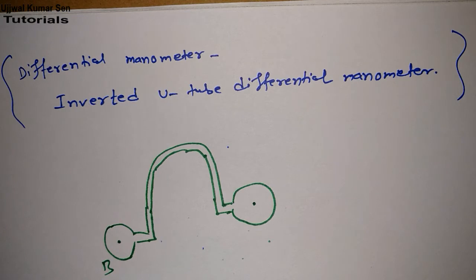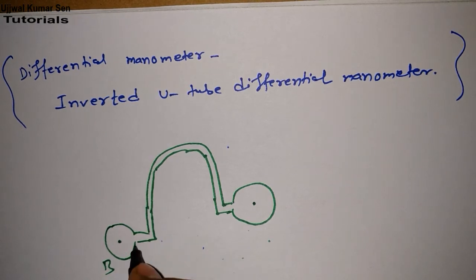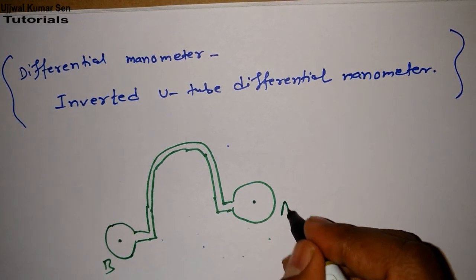In case of differential manometer we have to find out difference between two points of two pipes. That's why it is known as differential manometer. Here we have point B and point A.